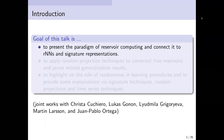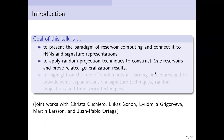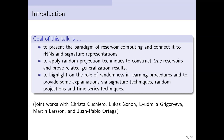Recurrent neural networks are very standard for reservoir computing; signature representations are less standard. We then apply random projection techniques to construct true reservoirs, prove related generalization results, and highlight aspects of randomness in general learning procedures — and explanations for that randomness via signature techniques, random projections, and time series techniques.